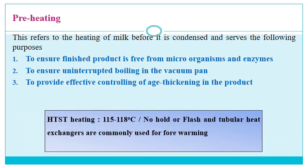The next step is preheating — heating the milk before it is condensed — which serves the following purposes: to ensure the finished product is free from microorganisms and enzymes, to ensure uninterrupted boiling in the vacuum pan, and to provide effective control of age thickening in the product. In case of HTST heating at 115 to 118°C for no hold, this serves as pasteurization. Flash and tubular heat exchangers are also commonly used for this preheating.